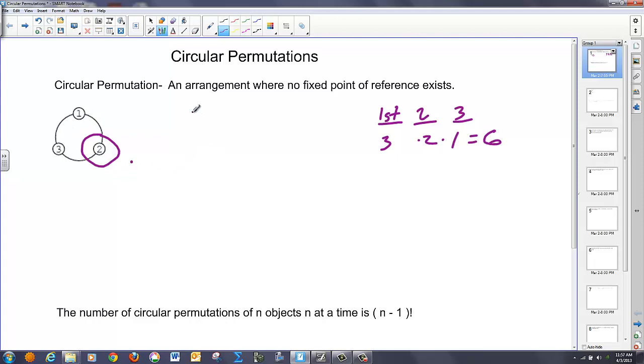So if I was to take and renumber this as having two here, one here, and three here around a circle, this is actually the same arrangement as what is given on the left over here, because to my right is one, and to my left is three. So this is not unique. Thus, we have to change our idea of how to write a formula for the arrangements of a circular permutation.